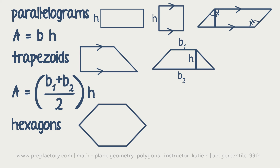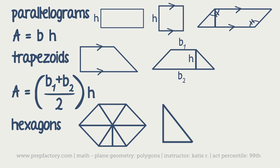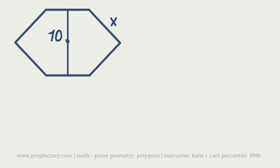Our next type is the hexagon. The most important thing about regular hexagons on this test is that they are comprised of a series of equilateral triangles. If you take the center point and draw lines out to each vertex, you get six equilateral triangles. To solve a hexagon problem, draw at least one of those triangles and drop an altitude to create a 30-60-90 triangle. So pretty much all hexagon problems are 30-60-90 triangle problems.